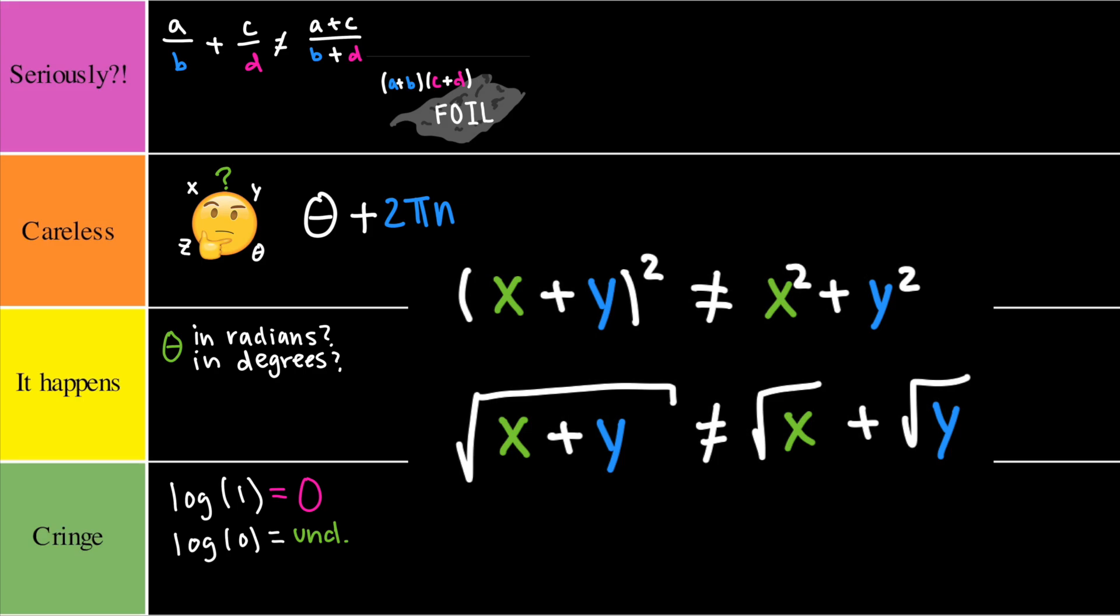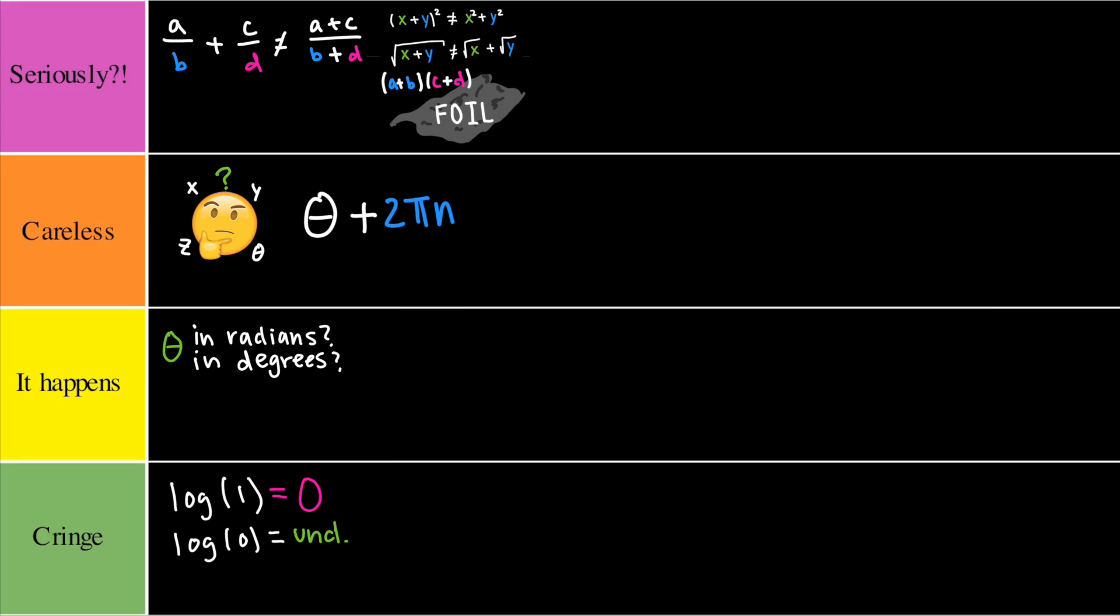A quantity of (x+y) squared is equal to x² plus y². This would have to go to the same regime as FOIL, so definitely seriously tier.